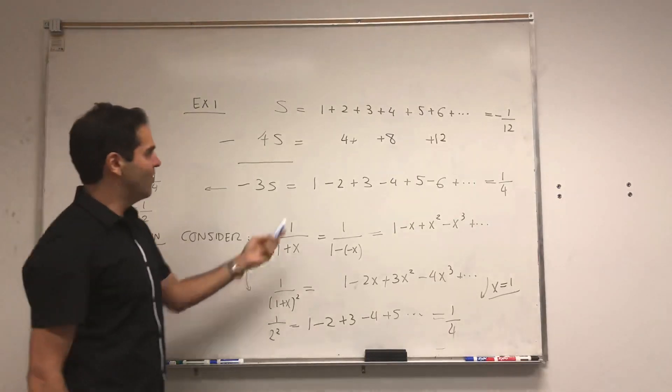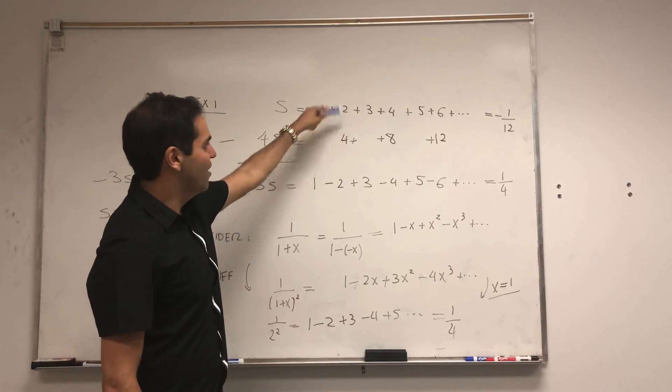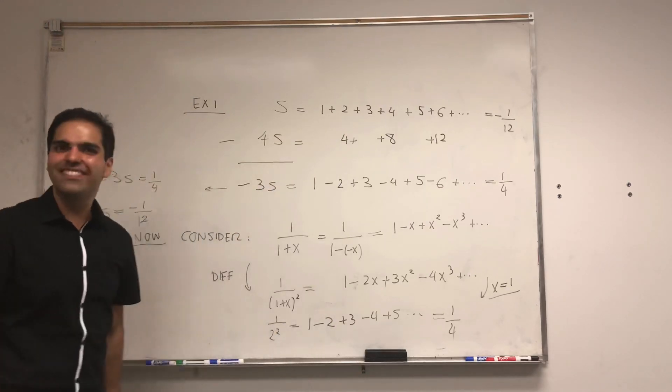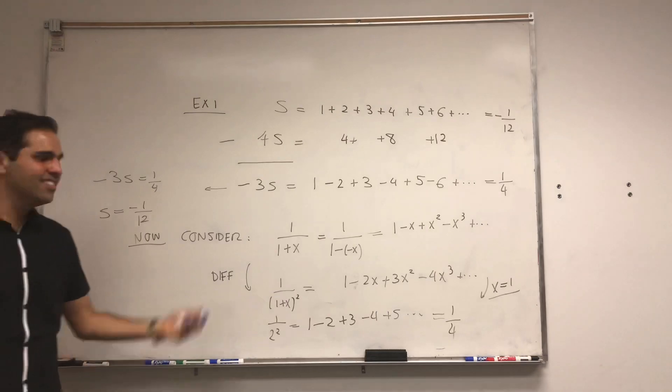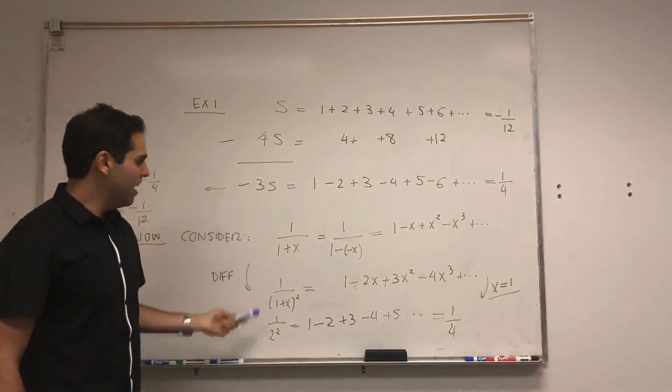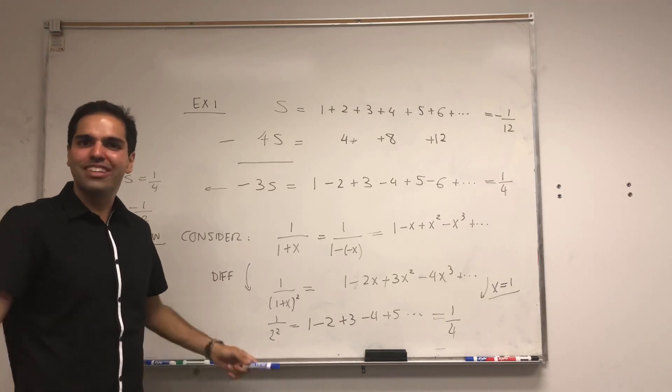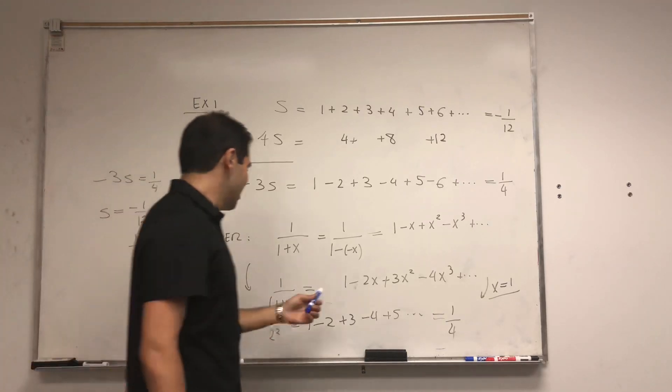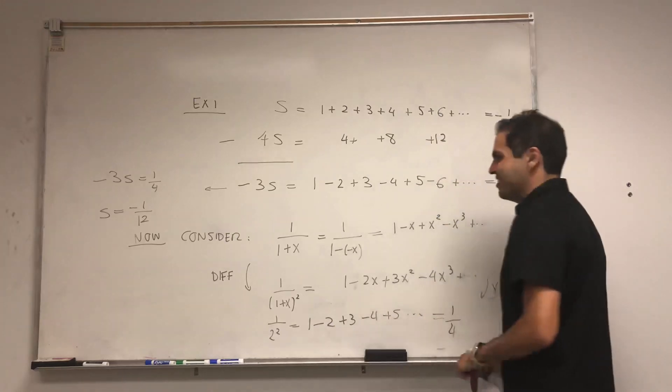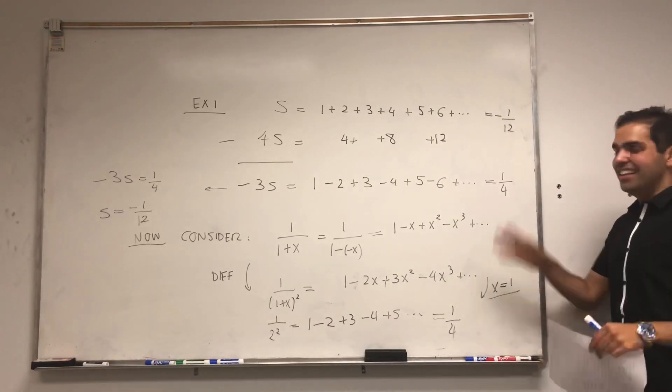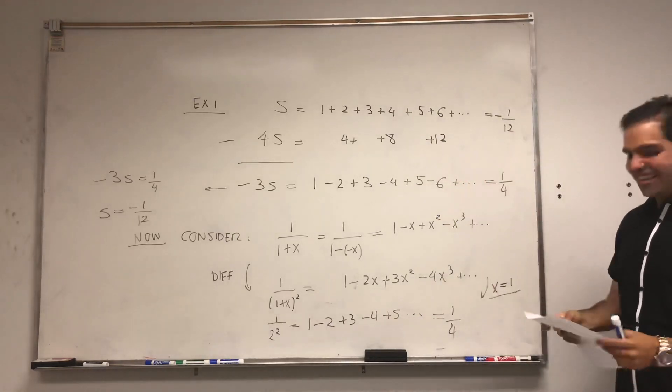Because first of all, commutativity and associativity don't hold for infinite series and for divergent series. And also, here, we just naively plugged in this number, even though it doesn't always hold because of the radius of convergence. That was one cautionary tale. And I think it's the most exciting one.